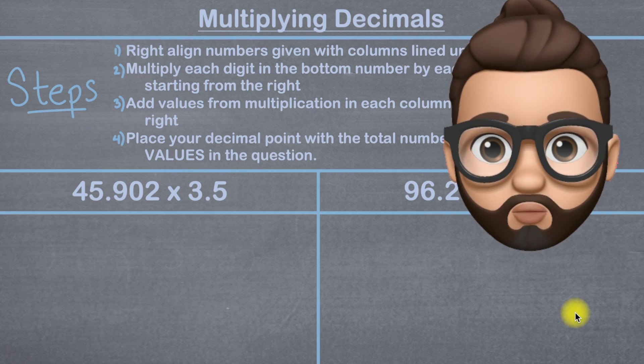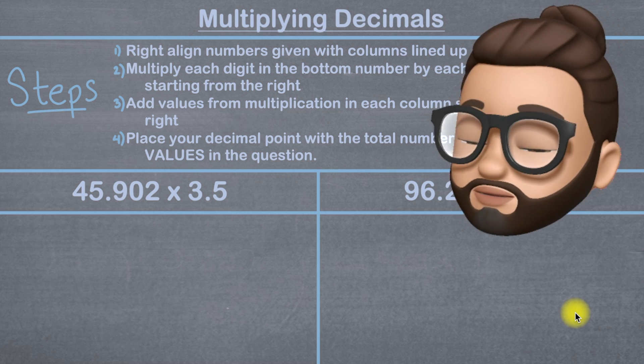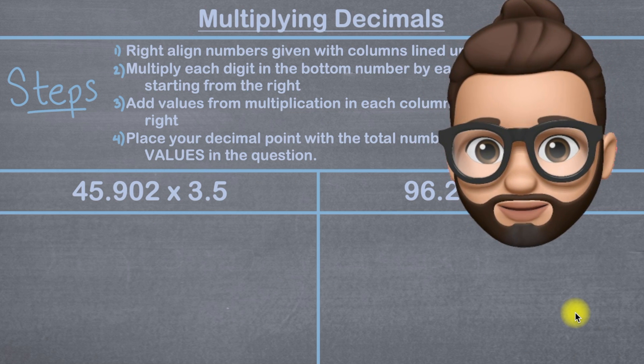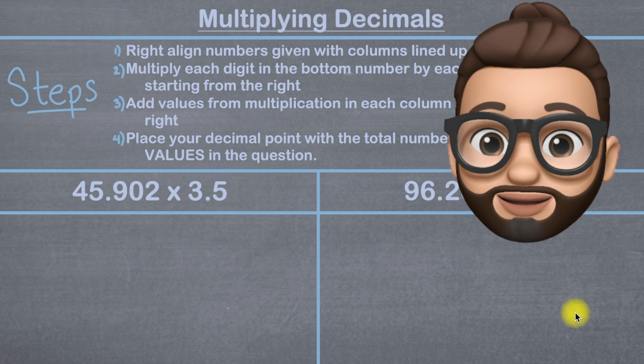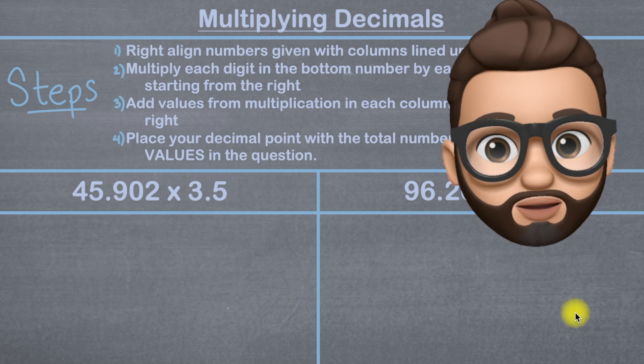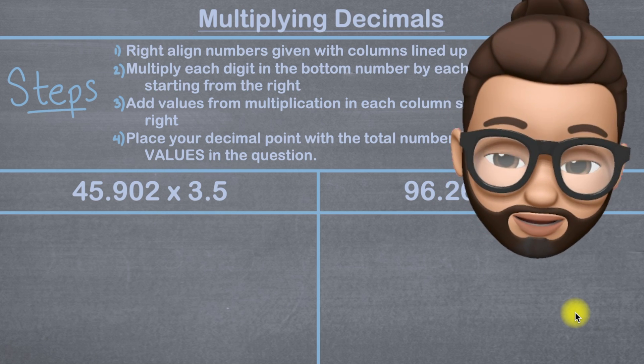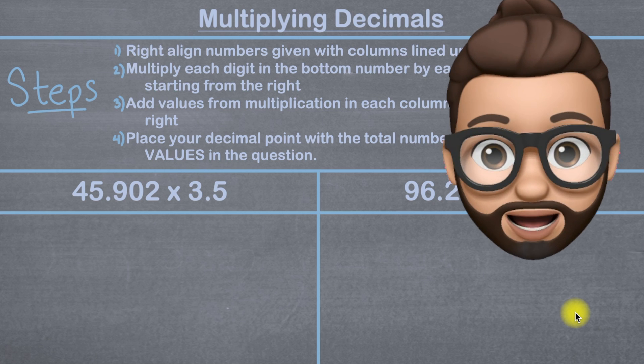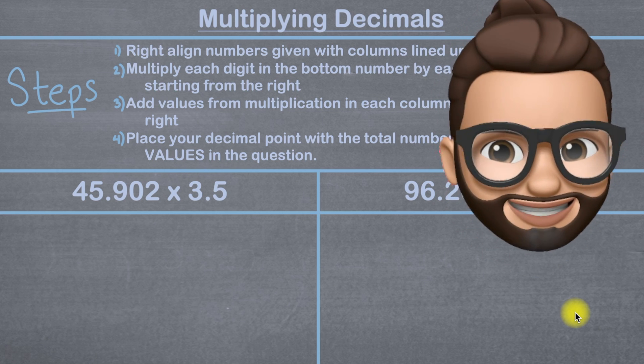In this lesson, we're going to go over multiplying decimals. We're going to use these four steps to solve example one, and then after that you can pause the video and try example two on your own, using example one as a model.